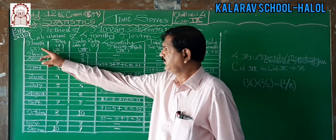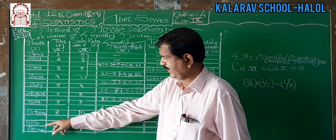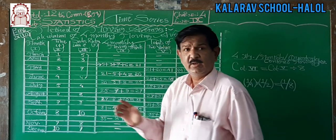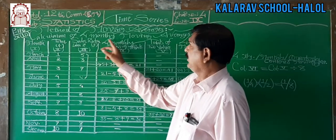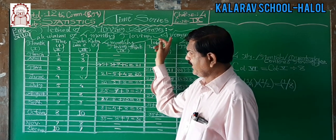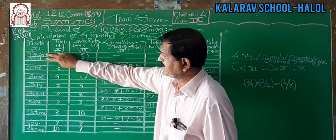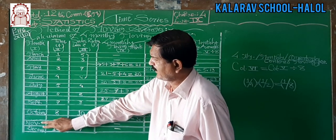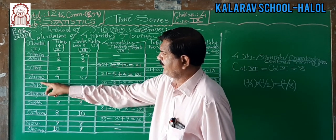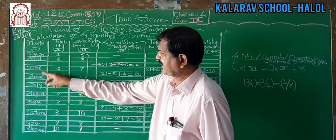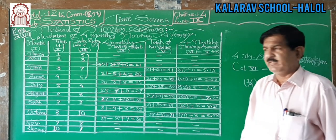The first column lists the months: March, April, May, June, July, and so on to December. In this example, with a 4-month moving average, the first 2 months and last 2 months consecutively will have a gap — one dash. Why there is a gap, I will explain later. N equals 10.